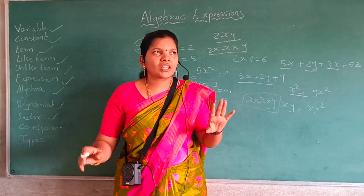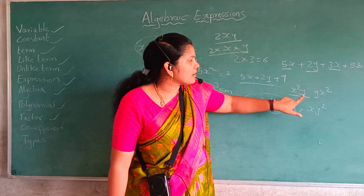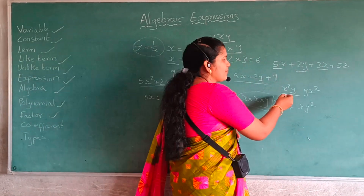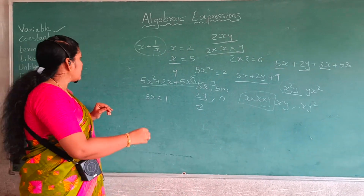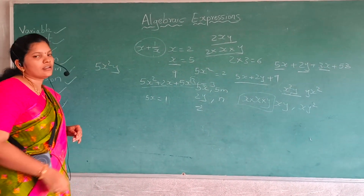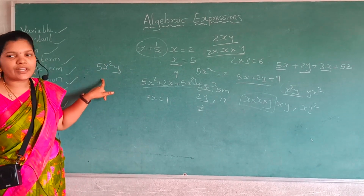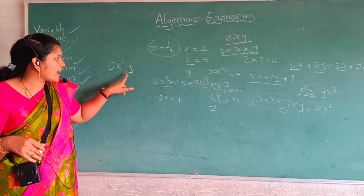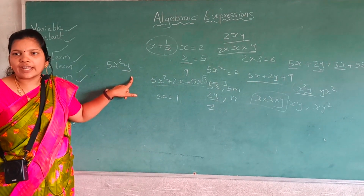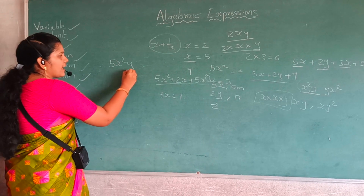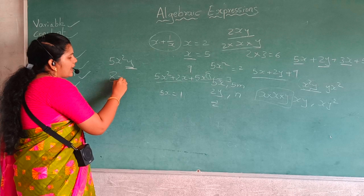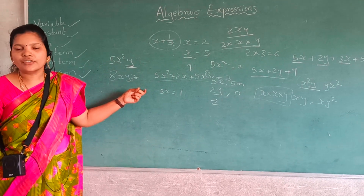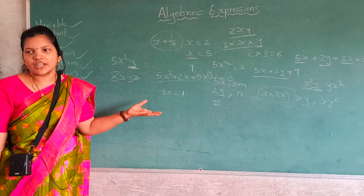And what is coefficient? If I ask what is the coefficient of y in the term x squared y — except y, all the remaining part is the coefficient. So x squared is the coefficient of y. In 5x squared y, the coefficient of y is 5x squared. Similarly, in the term 8xyz, the coefficient of z is 8xy.